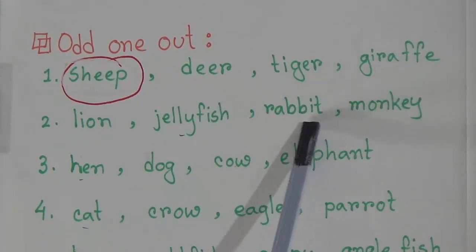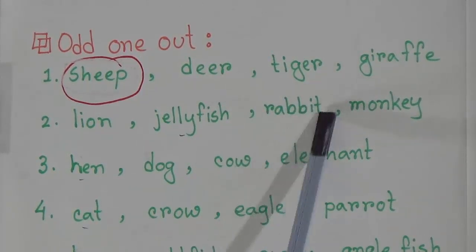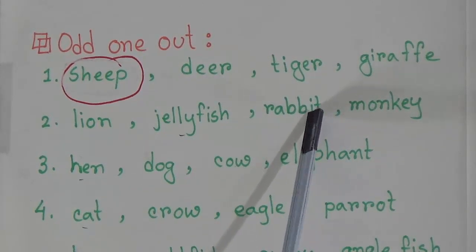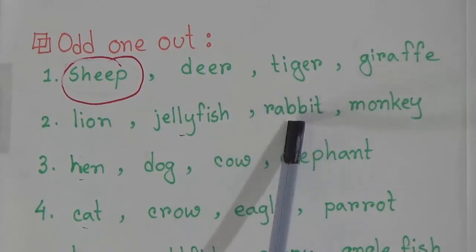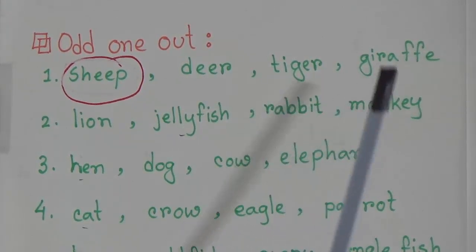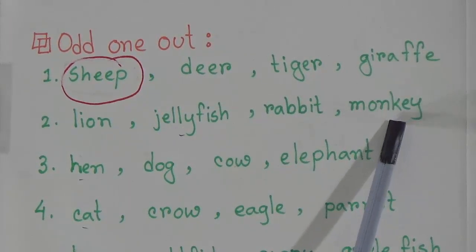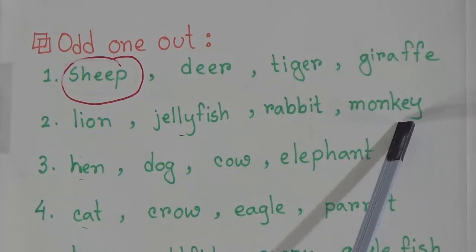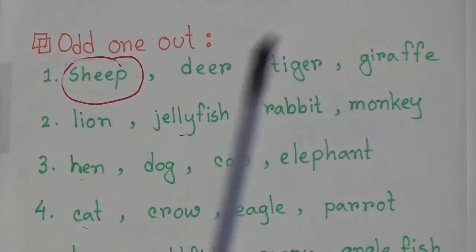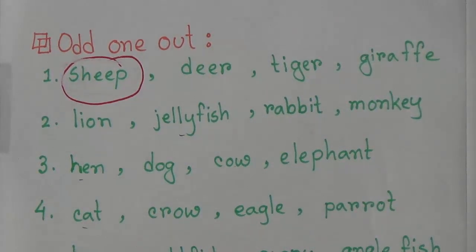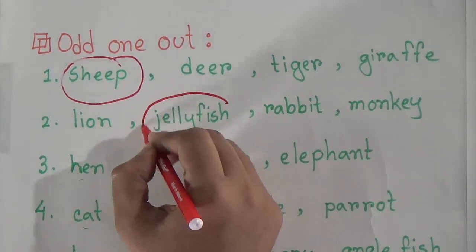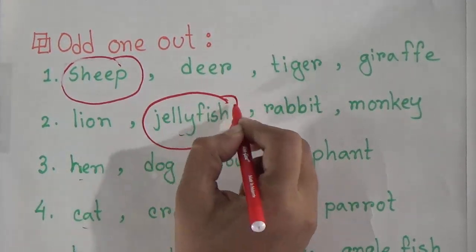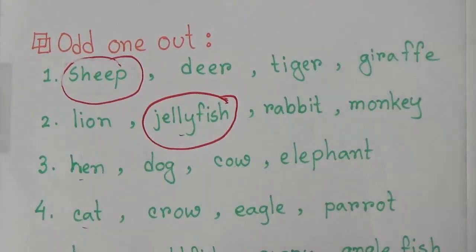Our second odd one out is: lion, jellyfish, rabbit, monkey. Lion lives in the forest, jellyfish lives in the sea, rabbit also lives in the forest or as a pet animal in our home, and monkey lives in the forest or in the trees. That means the odd one out here is jellyfish, because only it lives in water and all the rest live on land.